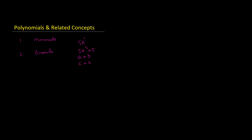You might have noticed that the first example has only x in it, but the other two have two letters, two variables. This introduces another way of classifying polynomials: univariate polynomials. A univariate polynomial has only one variable — all terms are in one variable. For example, 5x^2 minus 3x plus 5 uses only x, and 2a plus 2 uses only a. These are all univariate polynomials.